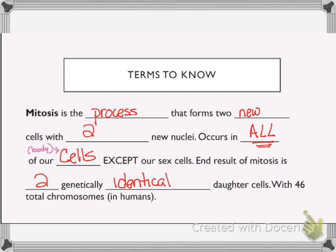At the end of mitosis, it results in two new cells that both have 46 total chromosomes. For human processes at least — other organisms have different numbers of total chromosomes — but for us it would be 46 chromosomes.